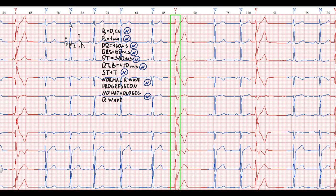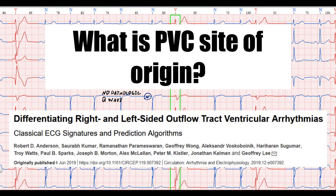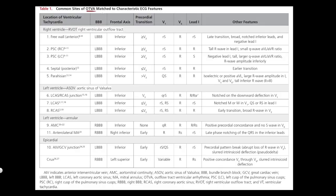For the further management strategy, we need to know the site of origin of the extrasystole. I use a reference article for ventricular site of origin evaluation. The table covers outflow tract ventricular arrhythmia ECG features: right ventricular outflow tract, left ventricular aortic sinus of Valsalva, left ventricular mitral annular, and epicardial features. Evaluation includes extrasystolic bundle branch block morphology, extrasystolic frontal mean QRS axis, precordial transition zone, and QRS morphology in specific ECG leads.